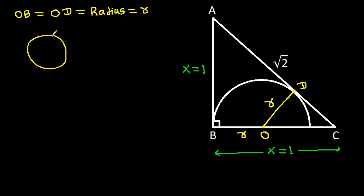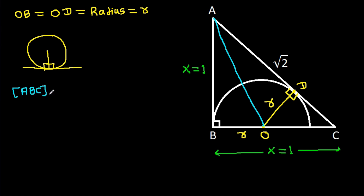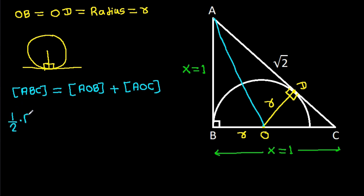In any circle, the radius and tangent are perpendicular to each other, so this angle will be 90 degrees. Now if we join AO, then the area of triangle ABC equals the area of triangle AOB plus area of triangle AOC.